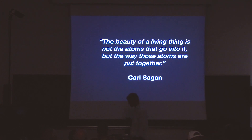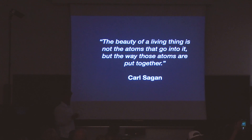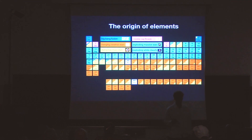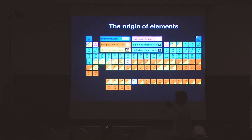This is really beautifully highlighted by Carl Sagan, who said: the beauty of a living thing is not the atoms that go into it, but the ways that those atoms are put together. In principle, astronomers look at the periodic table and think about where these elements came from. Rather than give you a convoluted picture, I'm going to simplify and pick some of our favorite elements.